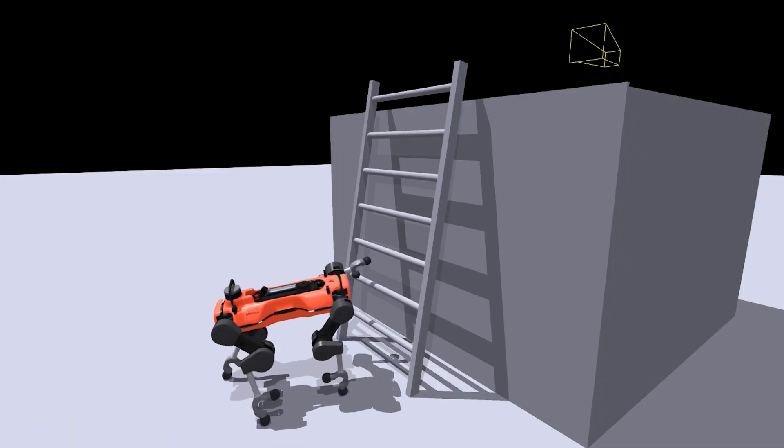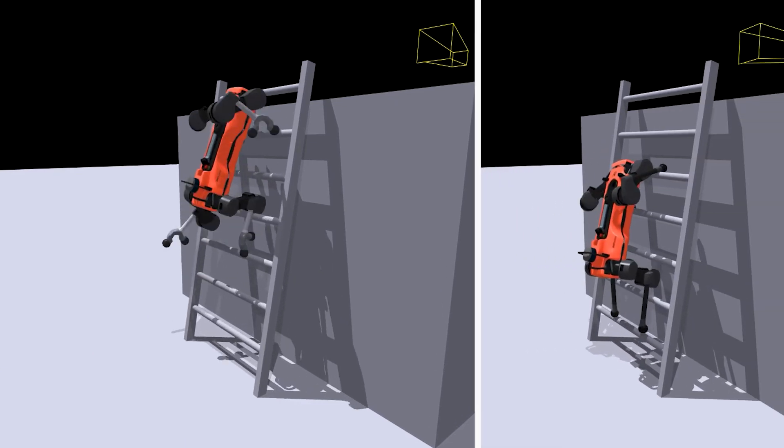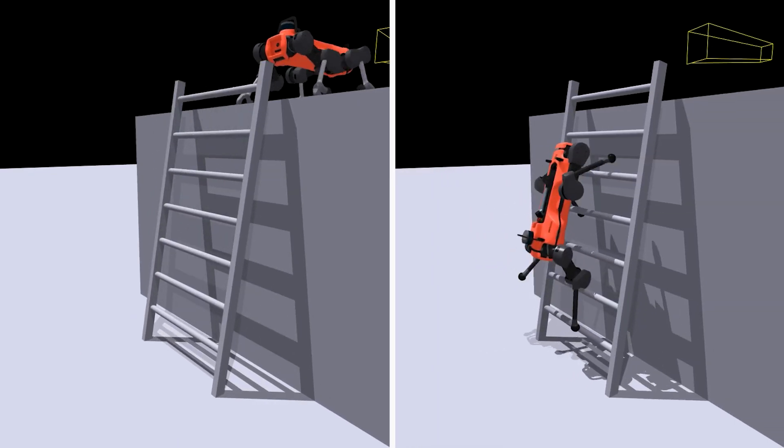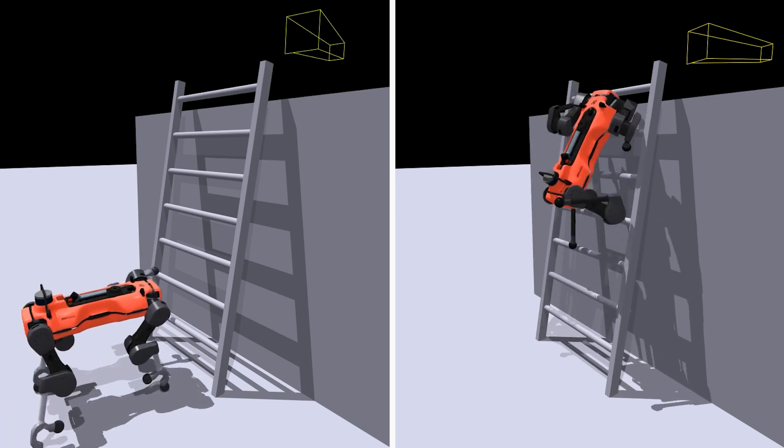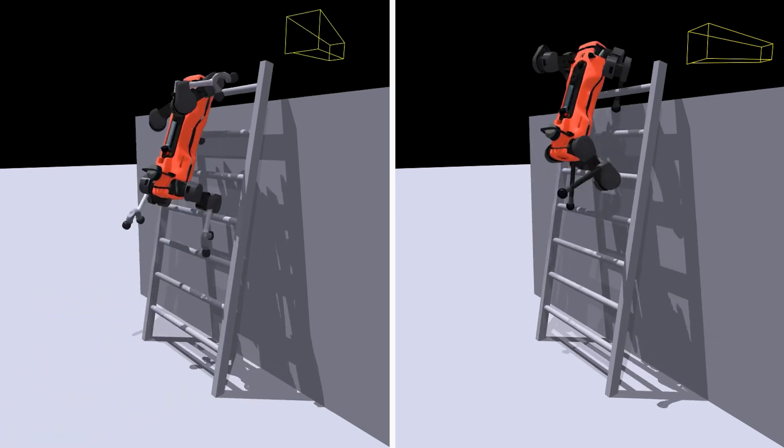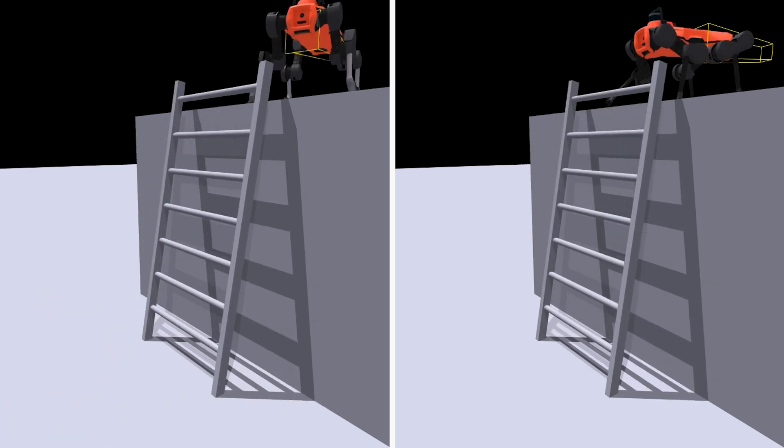We compared the policy which uses the hook end effector to a policy trained with the regular ball foot. We found that the hook substantially outperforms the ball in terms of speed and robustness, particularly at steep inclinations where the ball can apply forces to stabilize the base.